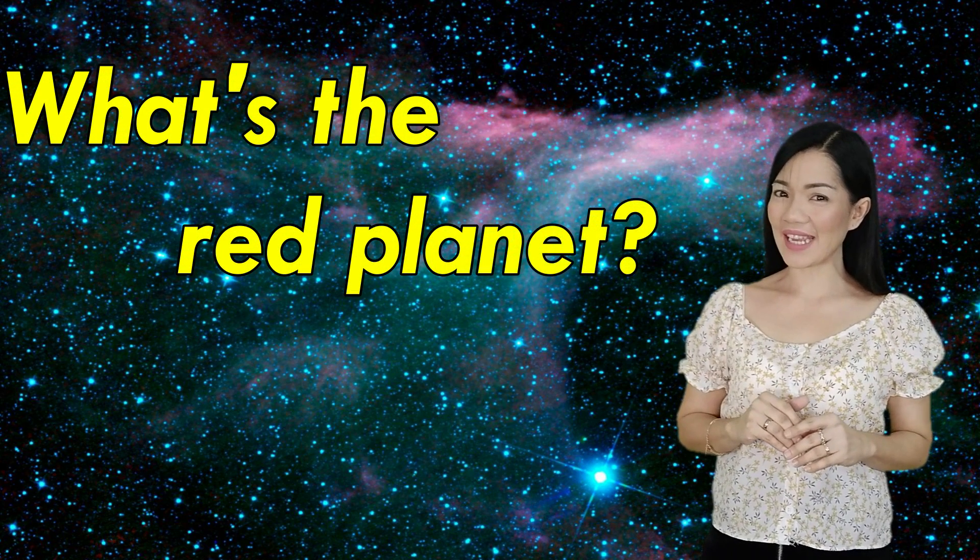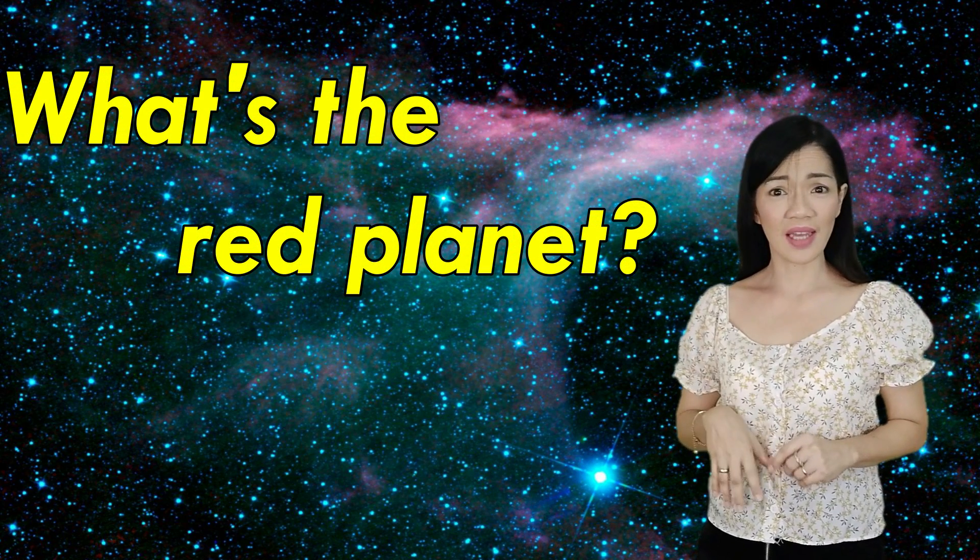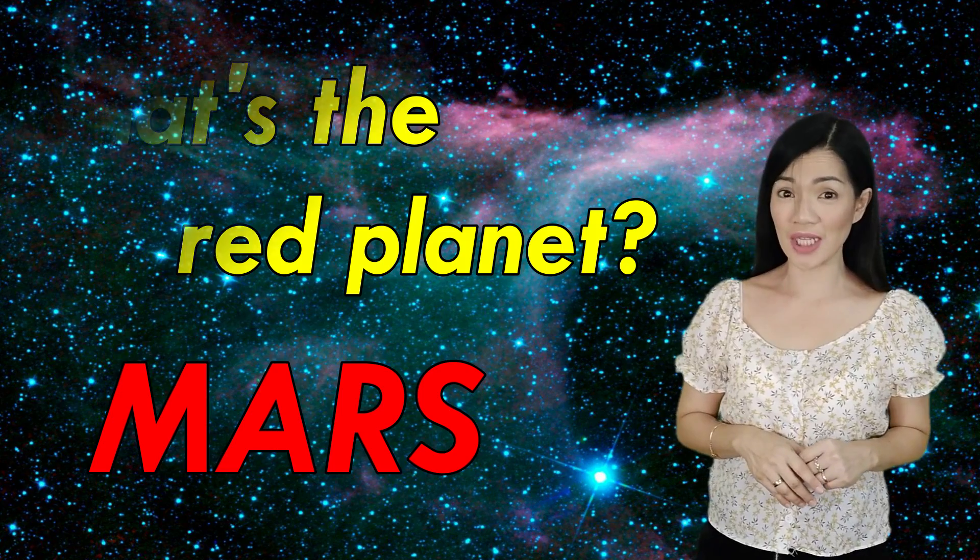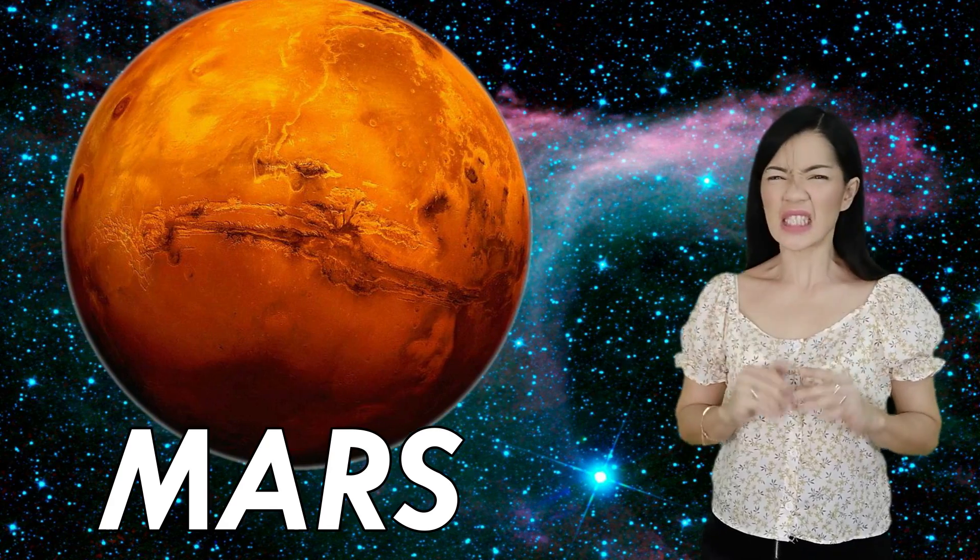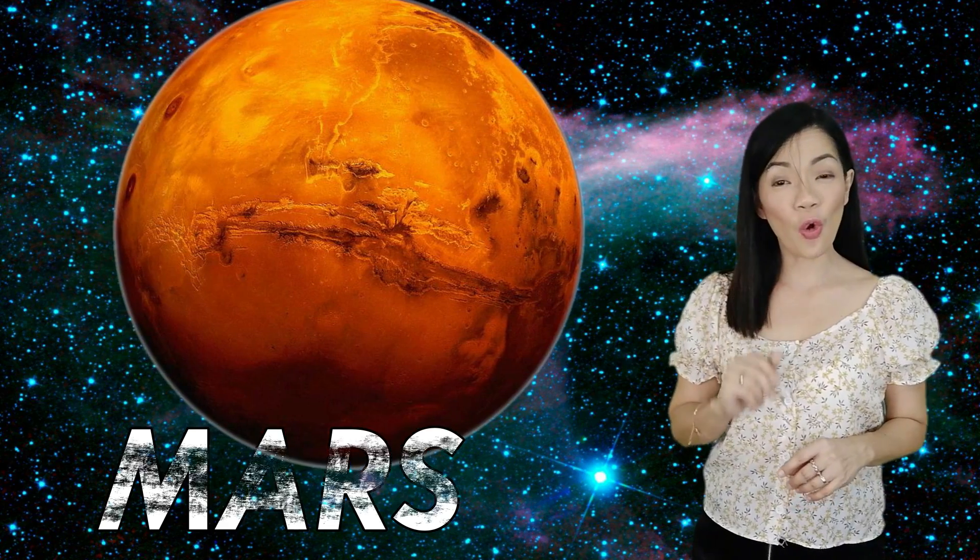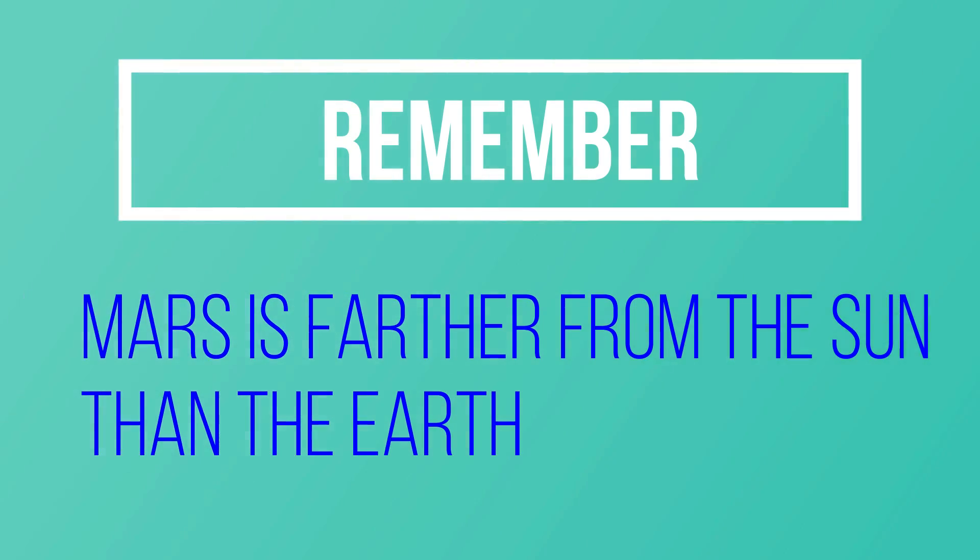So, if anyone asks you, what's the red planet? Tell them, hey! The red planet is Mars. Yeah! It's Mars! Even though it is red, it is not hot. It is much colder than Earth. Because remember, Mars is farther from the sun than the Earth. So, Mars is red and almost it looks like it's hot, but it's not.